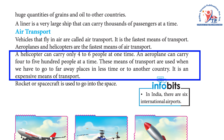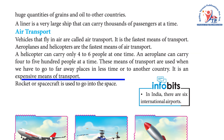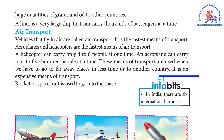An aeroplane can carry four to five hundred people at a time. These means of transport are used when we have to go to faraway places in less time or to another country. It is an expensive means of transport. A rocket or spacecraft is used to go into space. In India, there are six international airports.